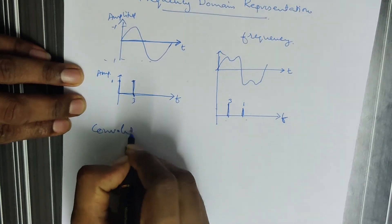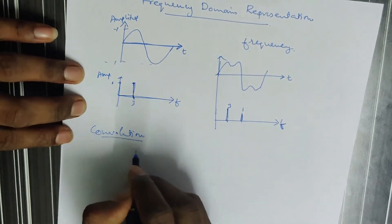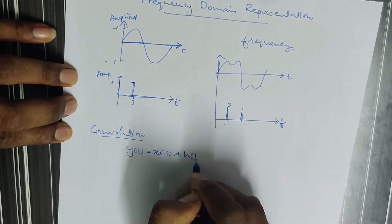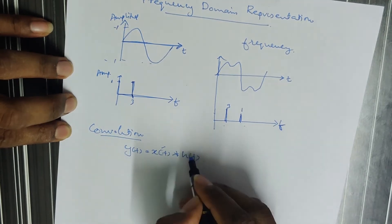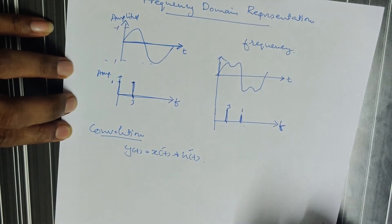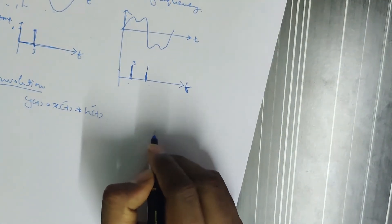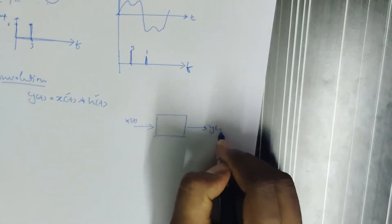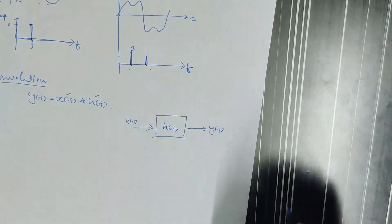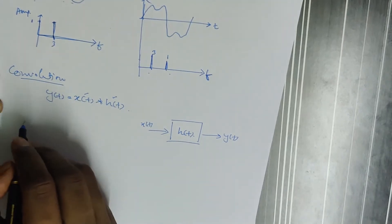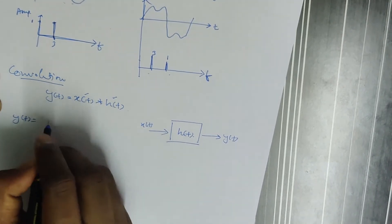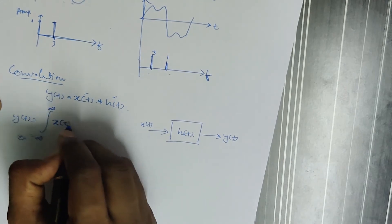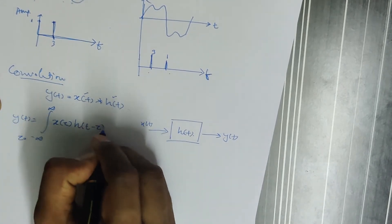Convolution is an operation. What is convolution? That is, y(t) is equal to x(t) convolution h(t). Here, x(t) is the input signal and h(t) is the impulse response. This can be pictorially represented as input x(t), output y(t), with h(t) as the impulse response. The equation is: y(t) equals the integral from minus infinity to infinity of x(τ) times h(t minus τ) dτ.